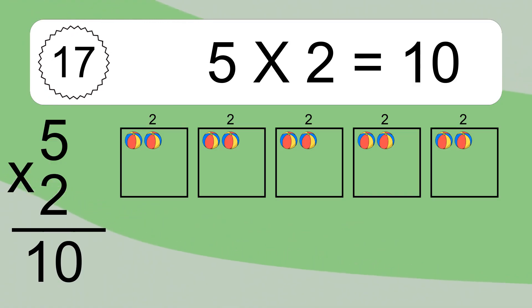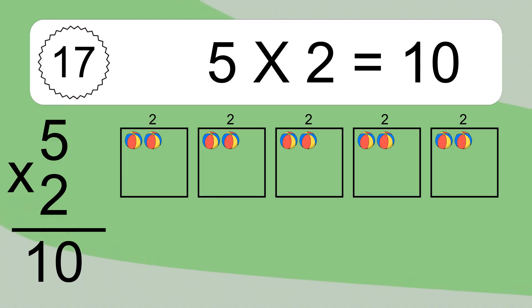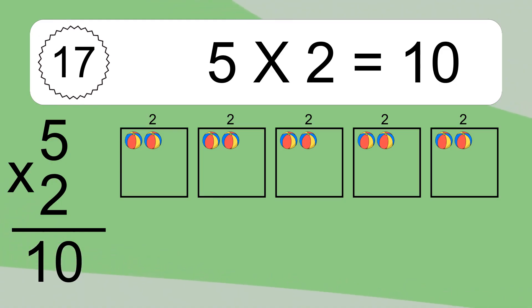5 times 2 equals 10. We have 5 boxes and each box has 2 colorful balls inside. If you count all the balls in all the boxes together, you will have 5 times 2 balls. This equals 10 balls.